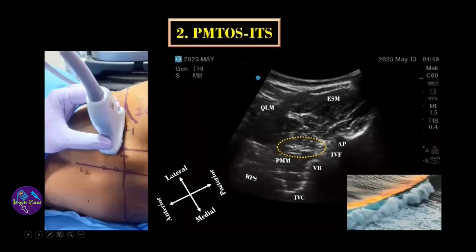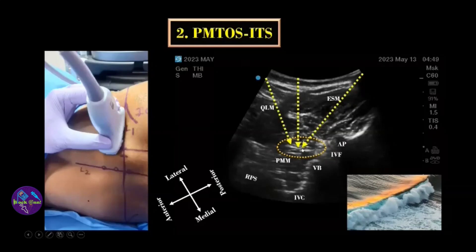Once you identify the lumbar plexus element, insert the needle either out-of-plane or in-plane, stimulate, and deposit the drug.